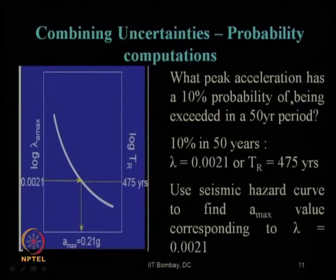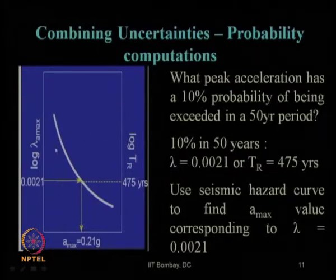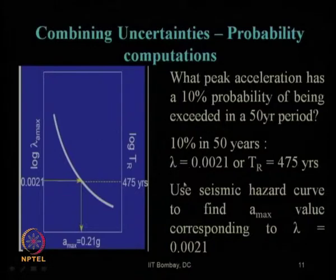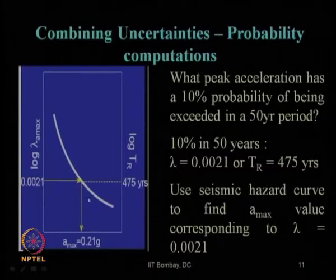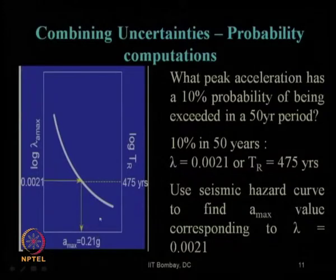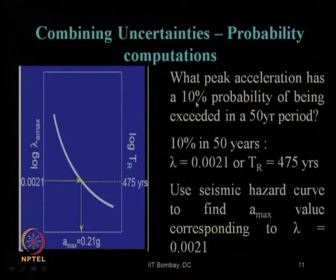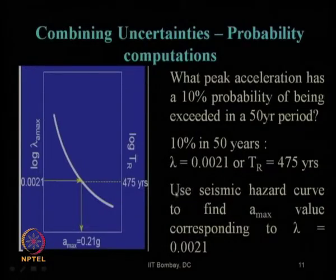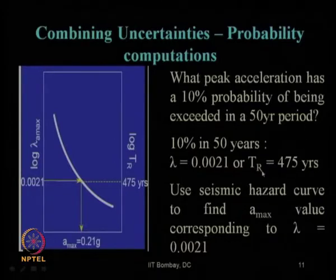For a 2% probability of being exceeded in 50 years — used for the most important structures — the return period TR increases and lambda decreases, so we design for a higher Amax value. That is the use of the seismic hazard curve: to find the Amax value corresponding to a particular lambda or a particular TR.